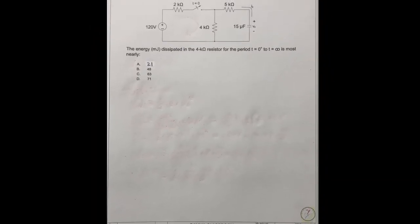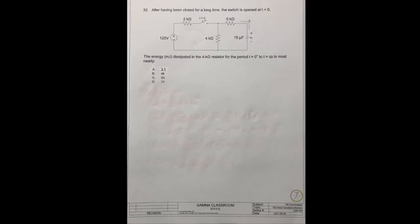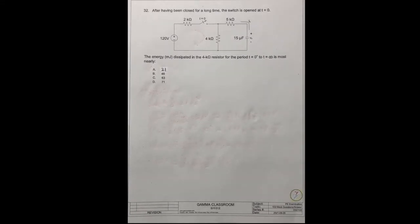Question No. 32. After having been closed for a long time, the switch is opened at t equals zero. The energy dissipated in the 4KΩ resistor for the period t equals zero to infinity is most nearly what number? There are four answers to choose from.